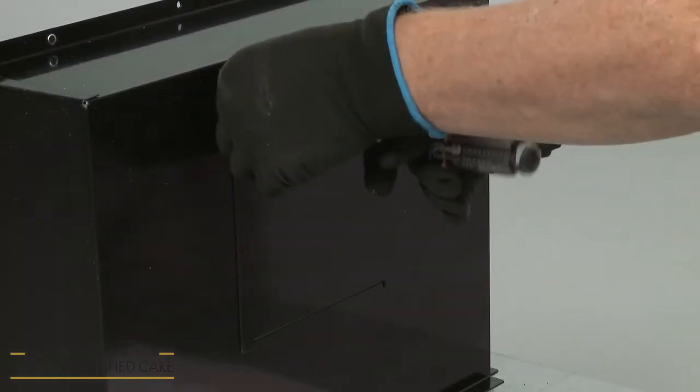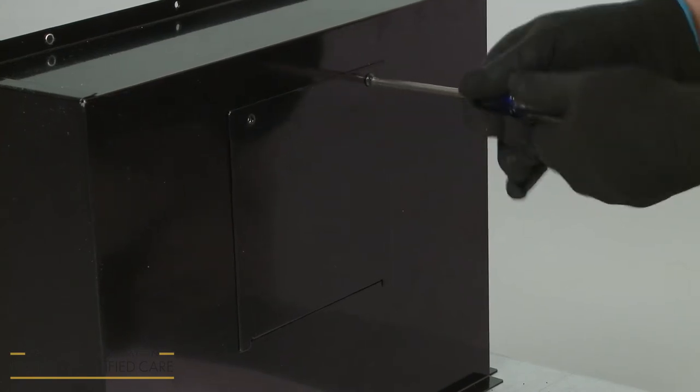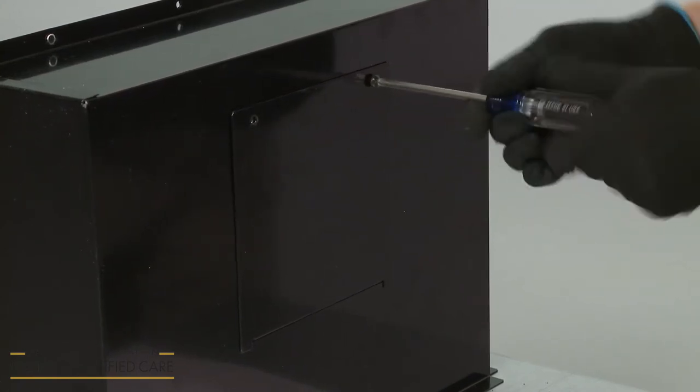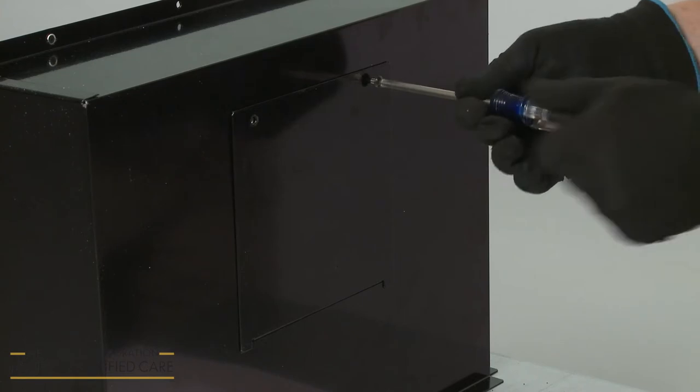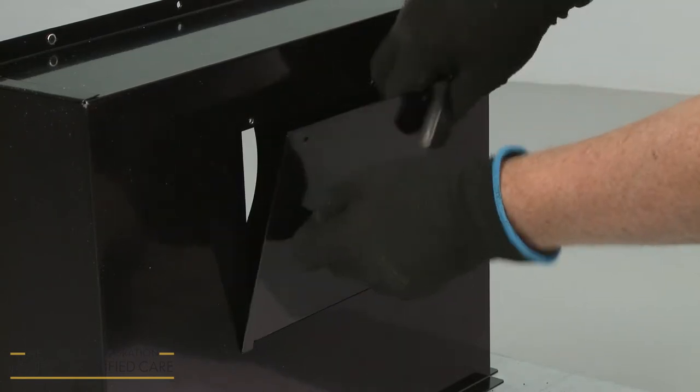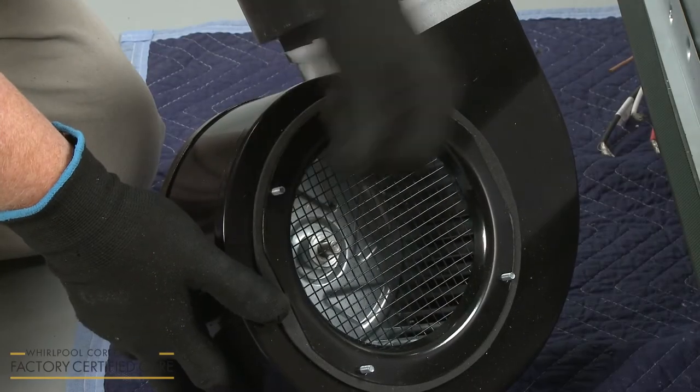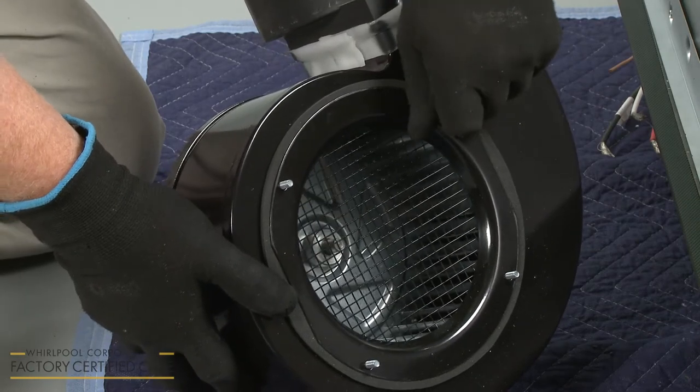Now use the Phillips head screwdriver to unthread the two screws securing the plenum access panel and remove the panel. Remove the four protective caps from the blower motor mounting bolts.